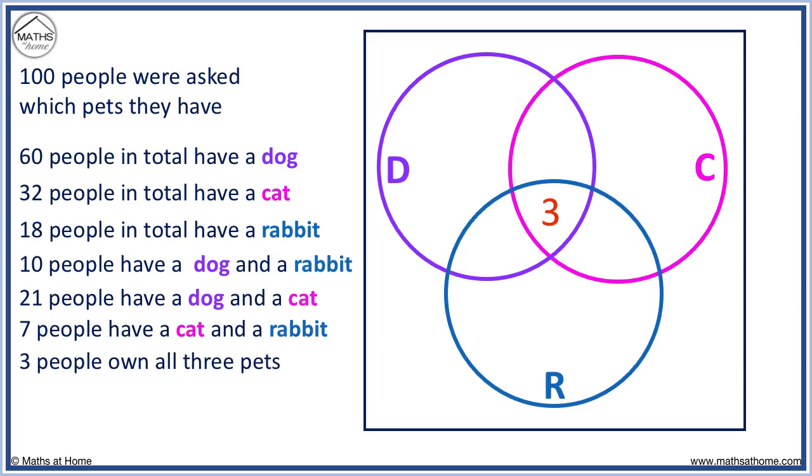Now we look at the overlap of 2 pets. 10 have both a dog and a rabbit. Here is the overlap and we have 3 already. We need 7 more.